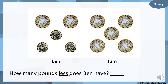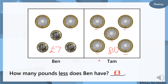How many pounds less does Ben have? We've got two two-pound coins and three one-pound coins: two, four, five, six, seven pounds. And then counting Tam's coins in twos: two, four, six, eight, ten — so Tam has ten pounds. To find the difference between seven and ten, put seven in your head: eight, nine, ten — that's three pounds less. Ben has three pounds less than Tam.